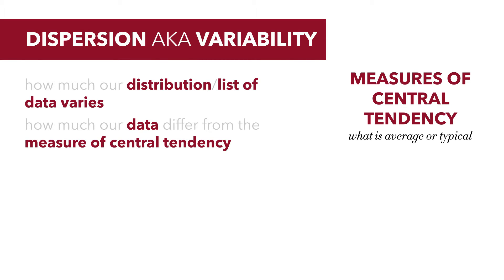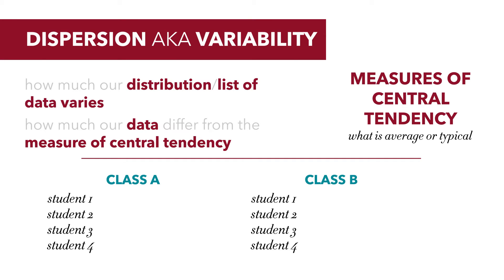The concept is really quite simple, and here's a simple example to show this. Suppose we have two classes, statistics class A and class B. In class A, there's four students. Student 1 scored a zero on the exam, student 2 scored a zero, student 3 scored a hundred, and student 4 scored a hundred. We can see that the average, the mean test score for class A is 50.